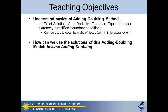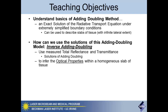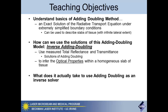Going into how we actually use these solutions — this forward model of the adding-doubling approach — to use measurements to infer what is actually going on inside. This inverse solving problem, the inverse adding-doubling (referred to as IAD), uses the measured total reflectance and transmittance of a thin slab of tissue to actually infer what the absorption and scattering properties within it are.